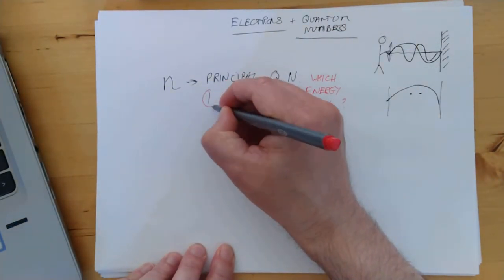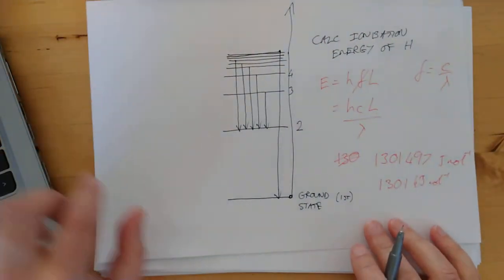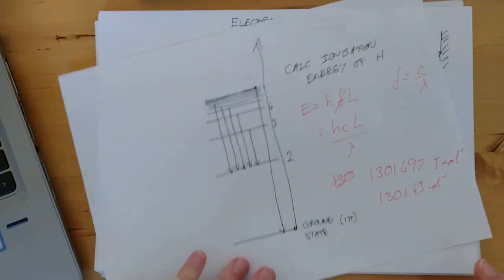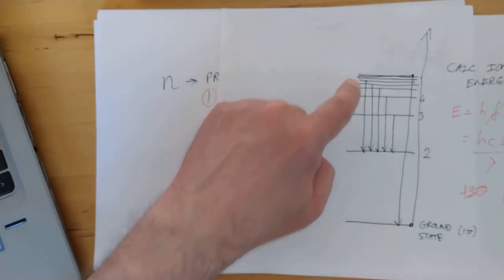So that's our principal quantum number, N. By the way, remember the numbers I put on these energy levels from the last time? 1, 2, 3, 4. Well, that's your N numbers.